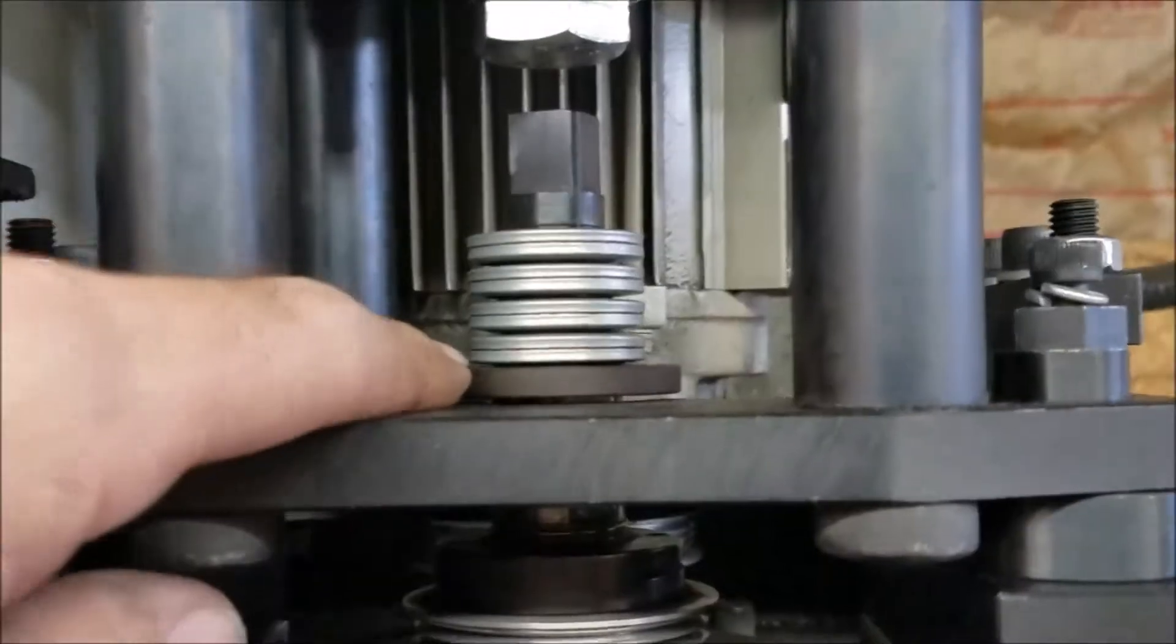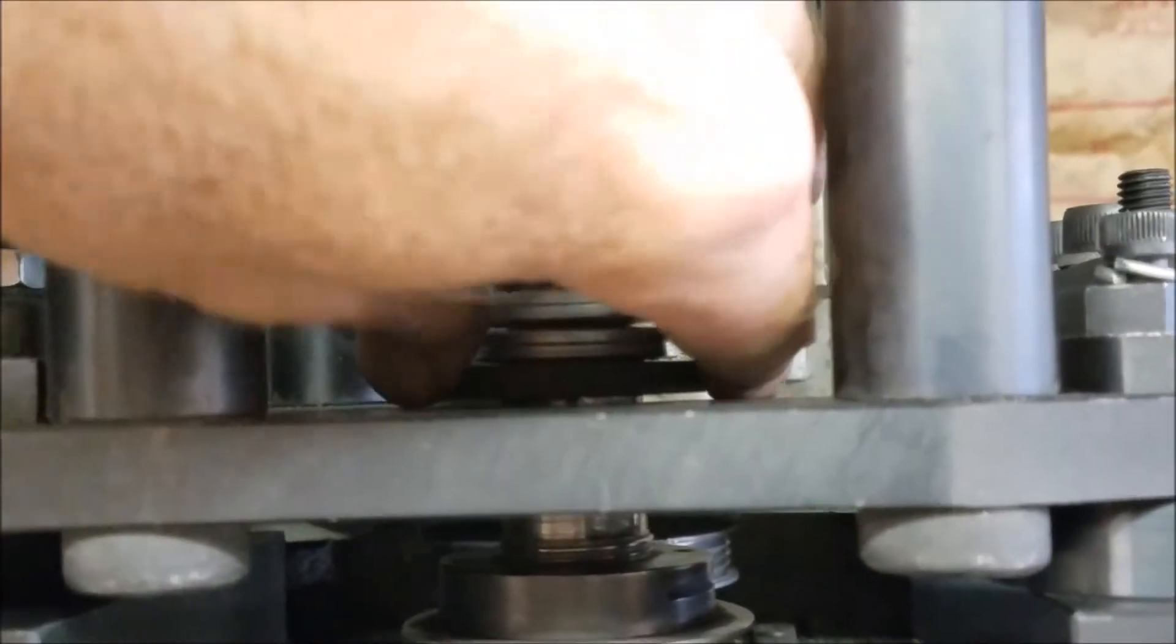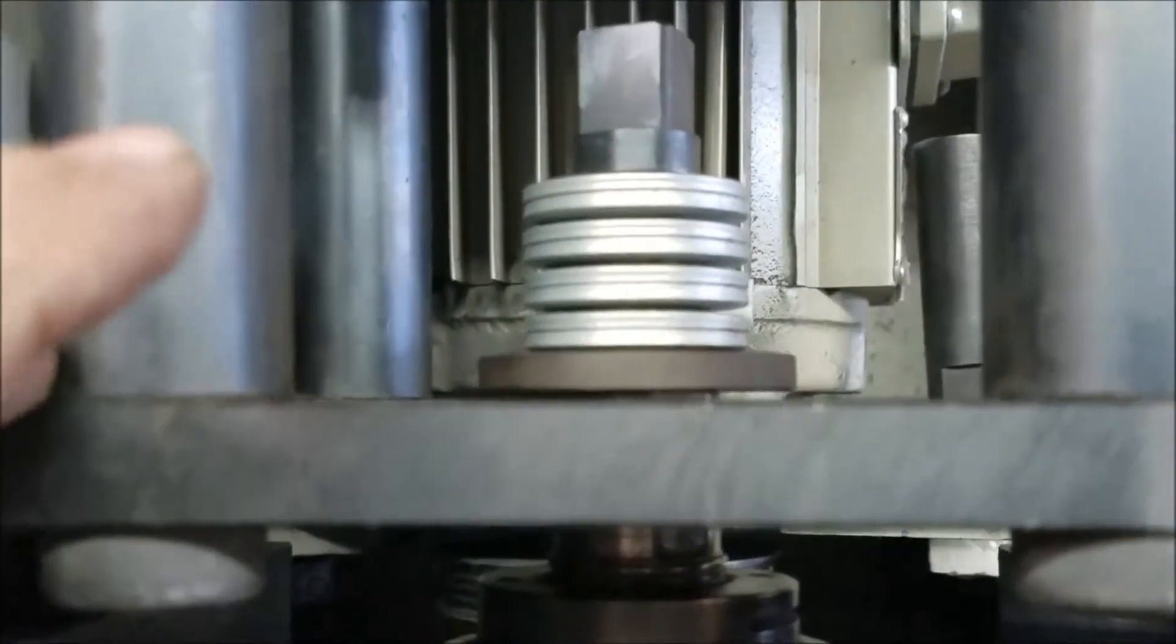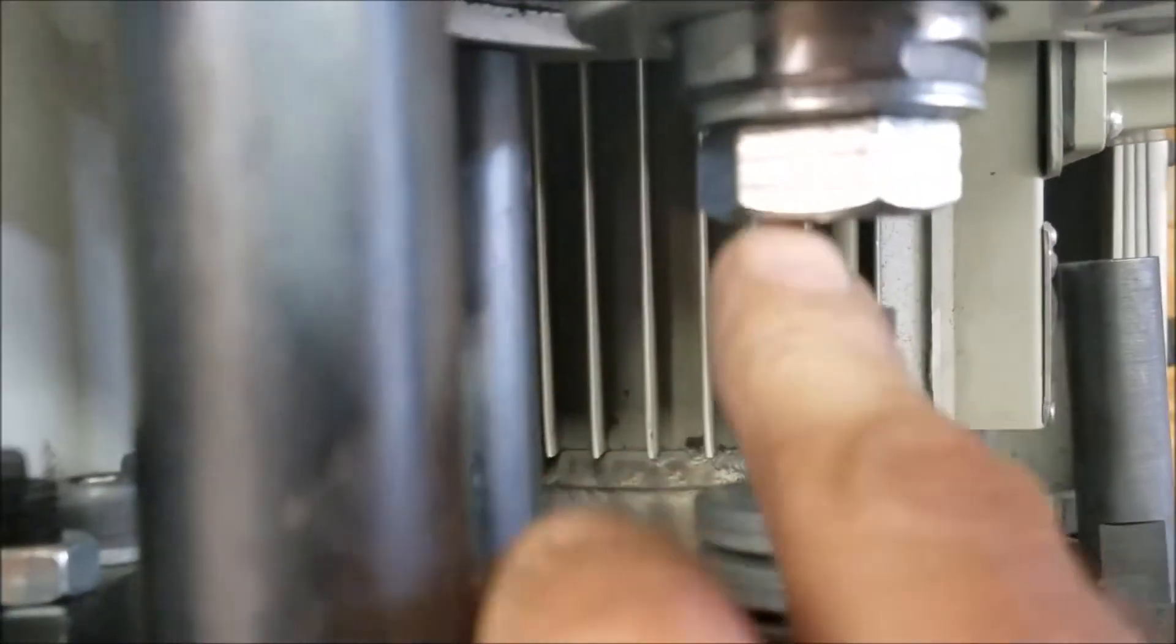The gap between this plate and this big washer is supposed to be between a sixteenth to three sixteenths. It looks like we probably have about a sixteenth, so I think we're good there. The distance between the bottom of this bolt, basically the gap between these two, is supposed to be no more than an eighth. I don't know, it looks like I have close to three eighths there, so it looks like I'm going to have to add some washers there.